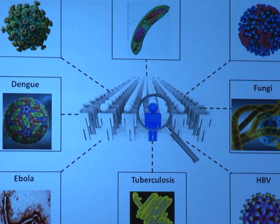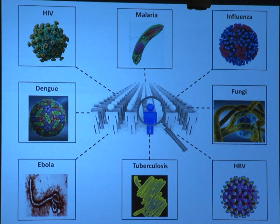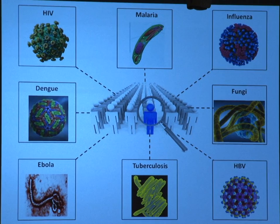We've been able to develop and optimize this technology — it's very flexible — to interrogate a wide range of pathogens. We started off looking at HIV, then moved to malaria, flu, fungi, hepatitis B, and others. But the story I want to talk about today is tuberculosis.